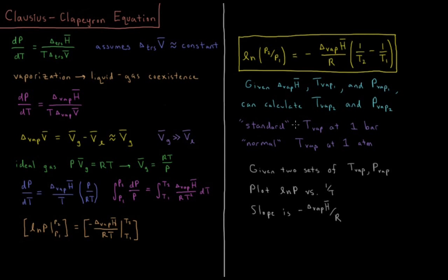The standard temperature of vaporization is the boiling point at one bar of pressure. The normal temperature of vaporization is the boiling point at one atmosphere. Typically we're more concerned with the standard case here.